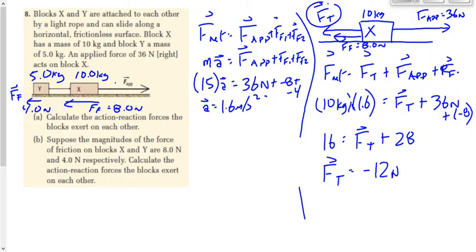Isn't that the same answer we just got? Can anybody justify why that didn't change? Object Y is half the mass, but it has a proportionate amount of friction — half the mass, half the friction; twice the mass, twice the friction — and the applied force ends up being the same. So it's not a coincidence that it ends up being the same value of tension.